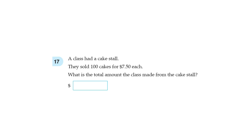A cake class had a cake store. They sold 100 cakes for $7.50 each. What is the total amount the class made from the cake store? So for this, we just do 750 times 100. So $7.50 multiplied by 100.